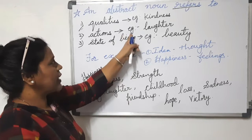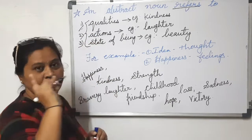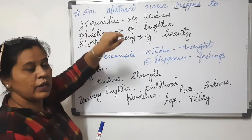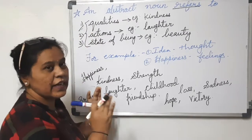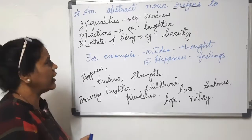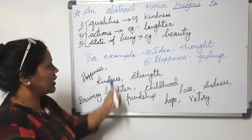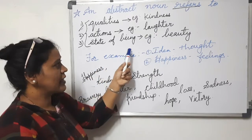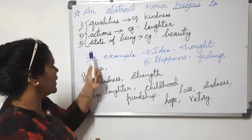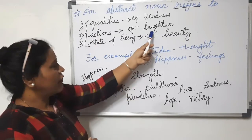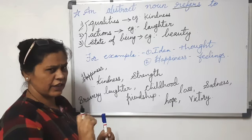There are three main bases of abstract nouns: qualities, actions, and state of being. Qualities — example: kindness. Actions — example: laughter. State of being — example: beauty. So the words which describe qualities, actions, or state of being are called abstract nouns.